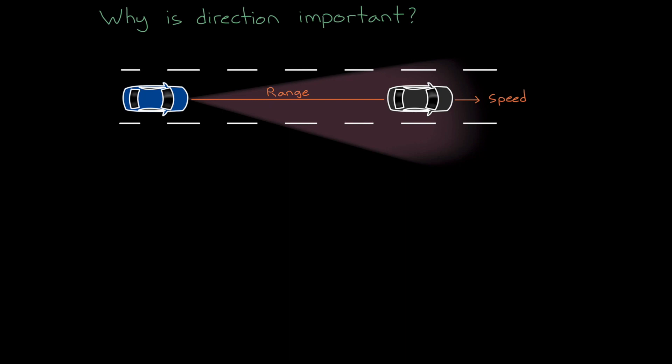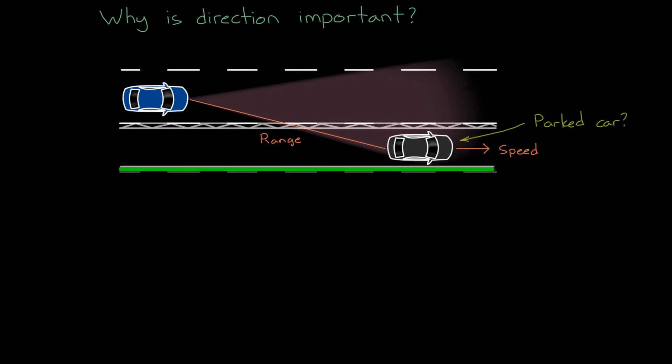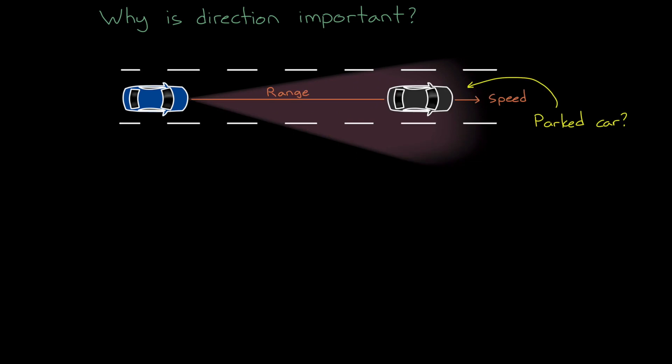However, the adaptive cruise controller wouldn't work too well if it couldn't determine if that detection came from an object in the same lane as itself, or the lane next to it. Or worse still, what if it couldn't determine the difference between a car parked on the side of the road and a car stopped in its lane. So angle determination along the azimuth is important.